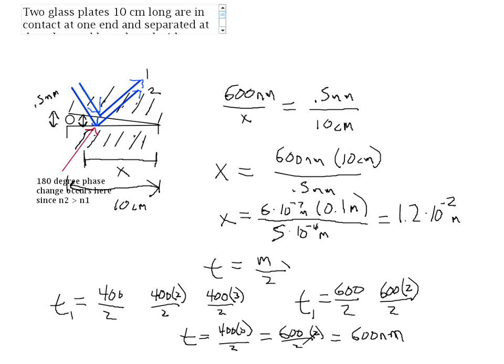If you wanted to find the location of bright fringes, you would use the equation 2nt = (m + 1/2)λ. Also notice that we didn't need the index of refraction of the glass here because the interference is occurring because of the air wedge, so you only need the index of refraction of air — not the index of refraction of glass — in this particular problem.